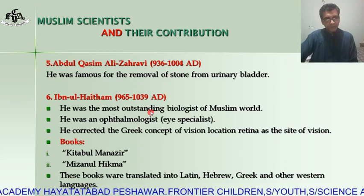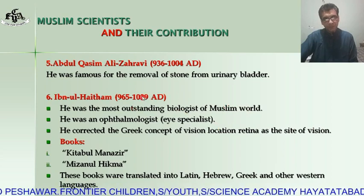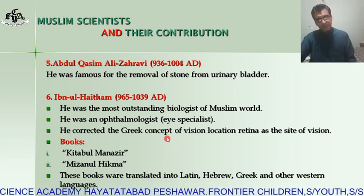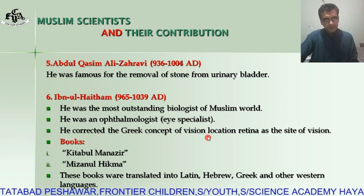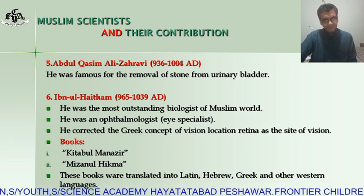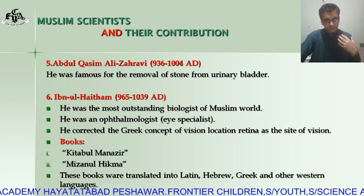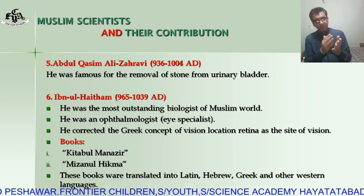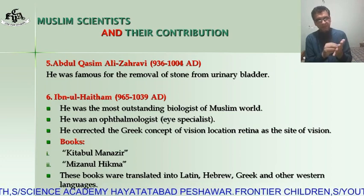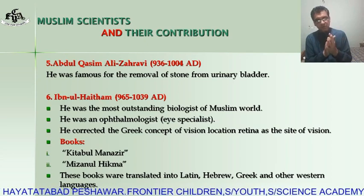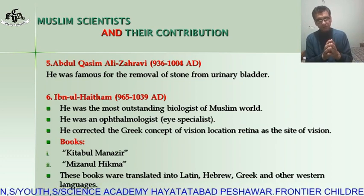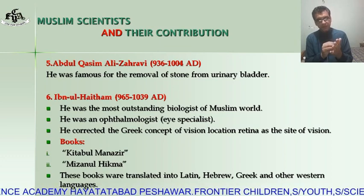Ibn al-Haytham was the most outstanding biologist of the Muslim world during this period and was an ophthalmologist — an eye specialist. He corrected the Greek concept of vision, identifying the retina as the site of vision. In Greek philosophy, it was concluded that the image formed elsewhere, but he corrected this, stating the image is formed on the retina, which modern science also supports.